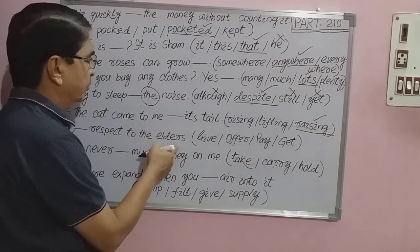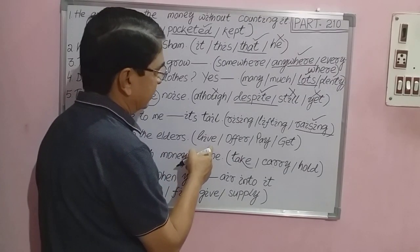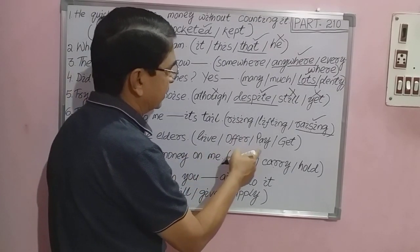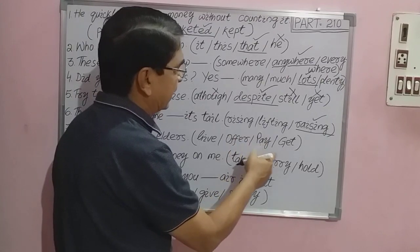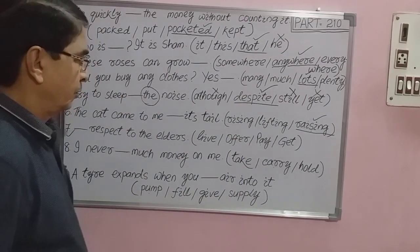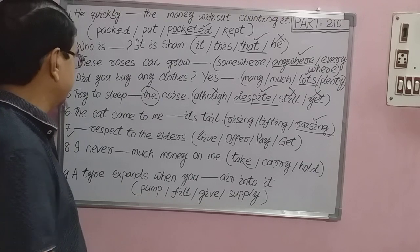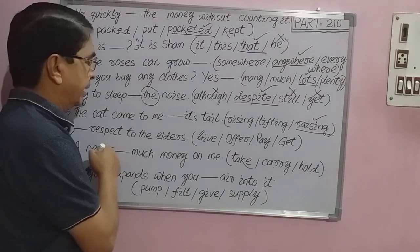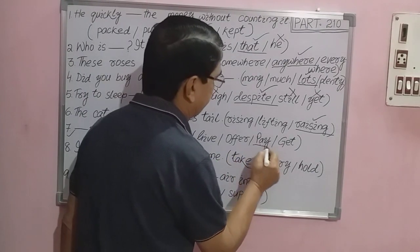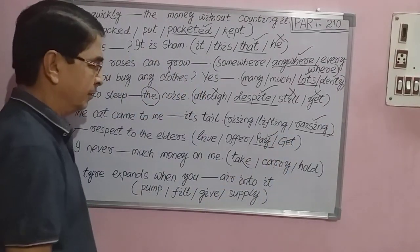Question number seven: '___ respect to the elders.' Options: A) give respect, B) offer respect, C) pay respect, D) get respect. According to the collocation principle, 'pay respect' is the correct collocation — pay respect to the elders.